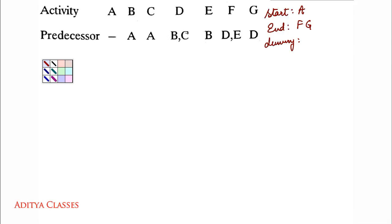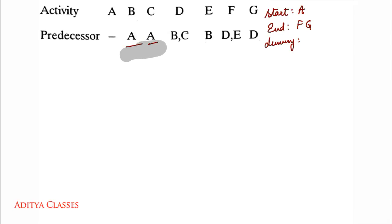Now what about dummies? We scan the predecessor list and see if there is a change in the grouping pattern of the activities. Wherever we see A in the predecessor list, it is alone — it is not there with anybody else. So A is clear; no dummies for A.